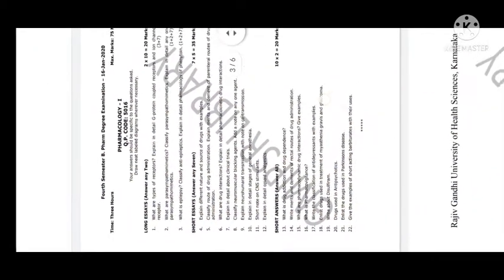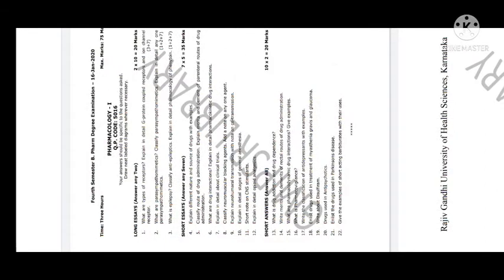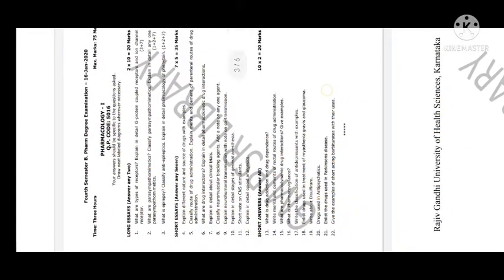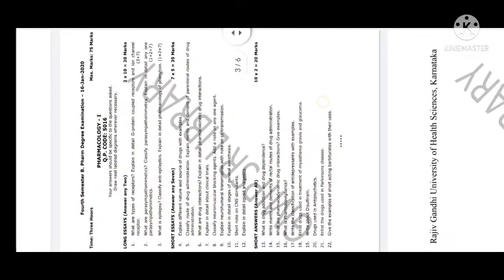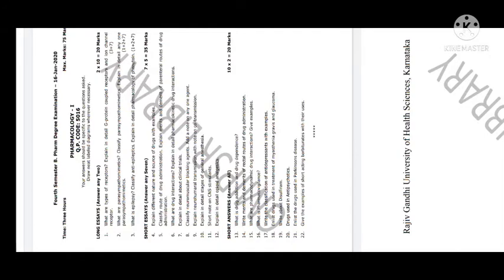Next 10-mark question: what are the types of receptors? Explain in detail G-protein coupled receptors and ion channel receptors — very important. Then what are parasympathomimetics? Classify parasympathomimetics and explain in detail. Then epilepsy — very important: classify anti-epileptics and explain in detail the pharmacology of phenytoin, which is used for epilepsy and seizure patients.